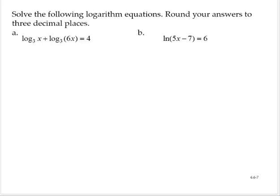Log base 3 of x plus log base 3 of 6x is equal to 4. Using one of our properties of logarithms, since I have a sum of logarithms with the same base, I can write this as a single logarithm with the product of the arguments. So then x times 6x is 6x squared. Log base 3 of 6x squared is 4.